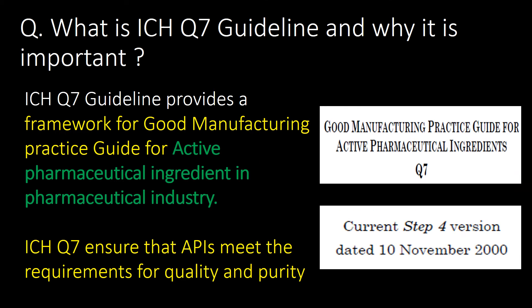Welcome. We will start with some basic questions and then go in detail. First question: what is ICH Q7 guideline and why is it important? ICH Q7 guideline provides a framework for Good Manufacturing Practice guide for Active Pharmaceutical Ingredients in the pharmaceutical industry. ICH Q7 ensures that APIs meet the requirements for quality and purity.